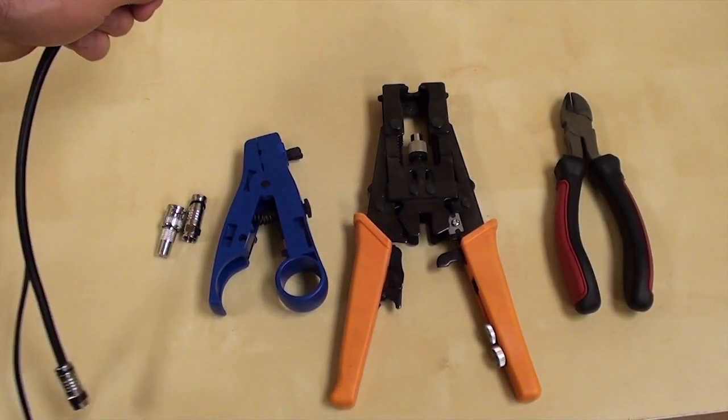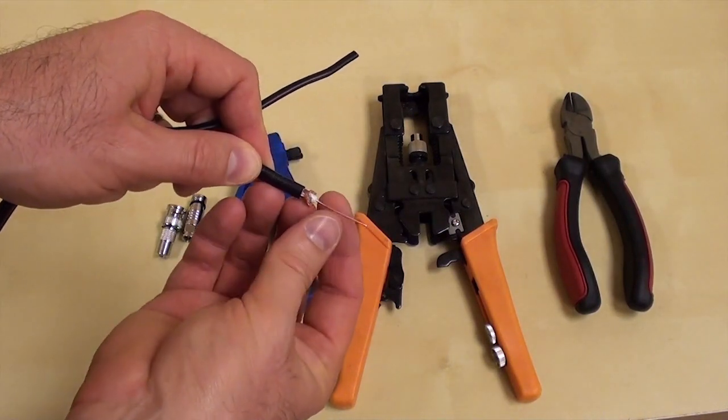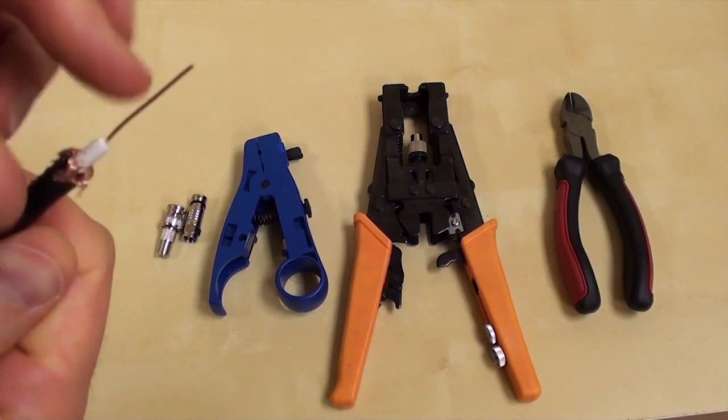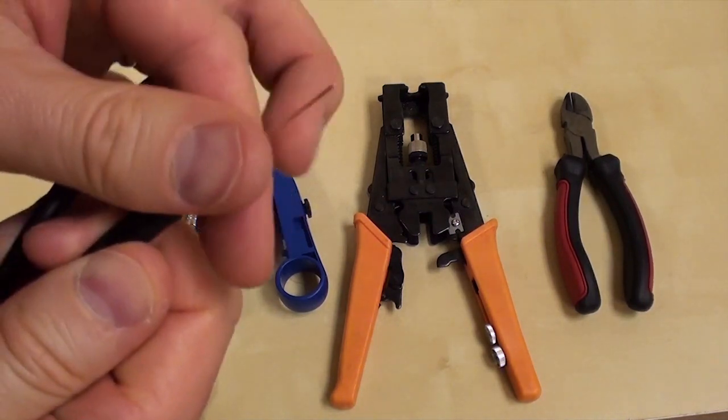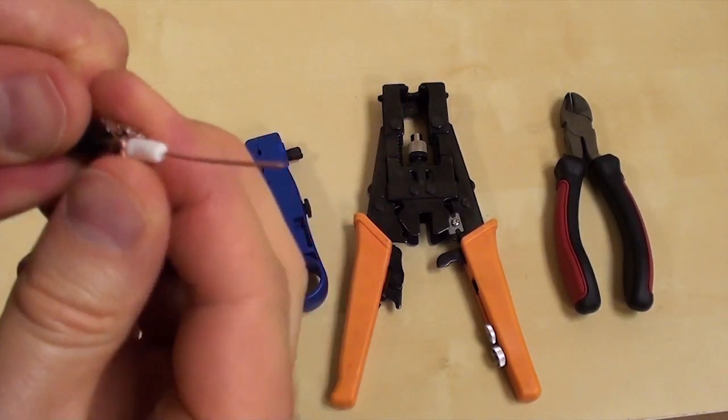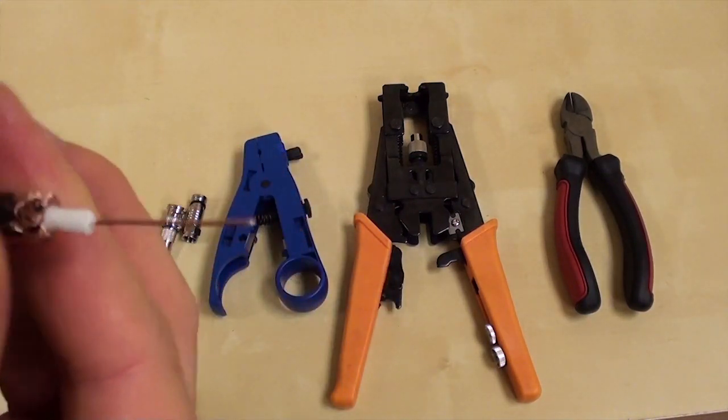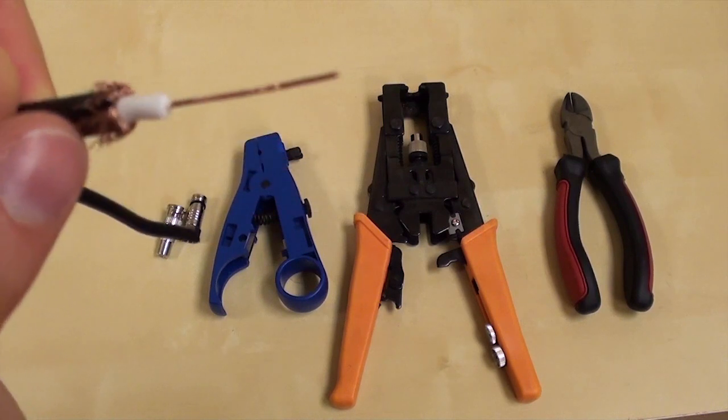Once the cable is stripped properly, we must peel back the braided copper shielding. This is important. Do not cut or remove the copper braiding. It is important to properly ground the cable. Check again to confirm that no shielding cable is left touching the core coax.